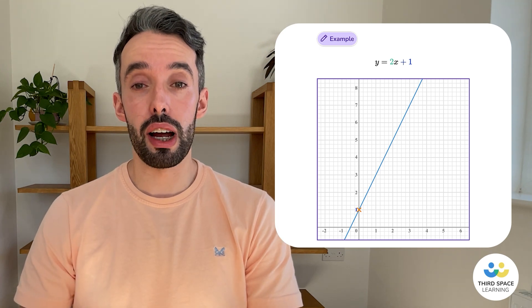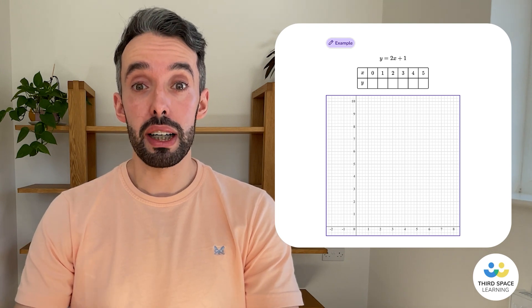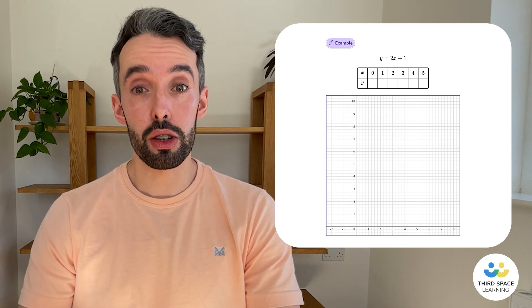So, the general form of this graph is y equals 2x plus 1. We can plot straight-line graphs by substituting in values for x to work out the y values.